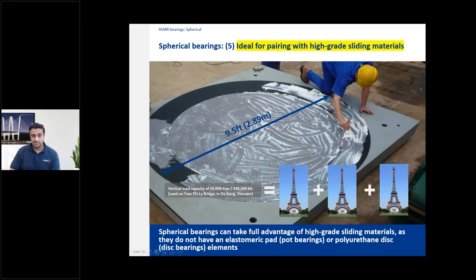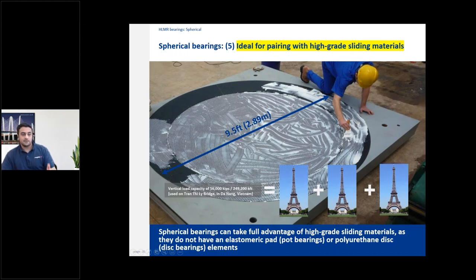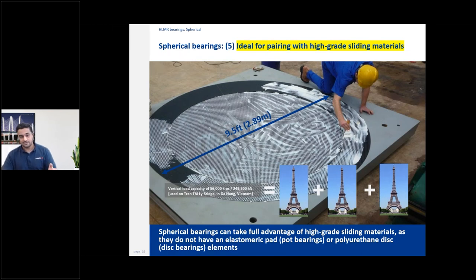Spherical bearings are ideal for pairing with high-grade sliding material. On disc or pot bearings, even if you use higher-grade sliding material, load capacity is still limited by the allowable pressure on the disc or elastomer. In spherical bearings, everything other than the sliding material is steel. With a strong sliding material and strong concrete below, you can make a very compact bearing for enormous loads — one Vietnam bridge example has each bearing carrying 56,000 kips, equivalent to the weight of three Eiffel Towers.